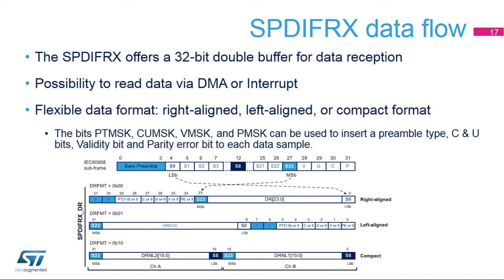The compact format can be interesting when the SPDIF-RX is receiving encoded audio frames. In addition, the SPDIF-RX can insert a preamble type, C and U bits, validity bit, and parity error bit with each audio sample. Using the mask bits, the user can select which information will be provided.